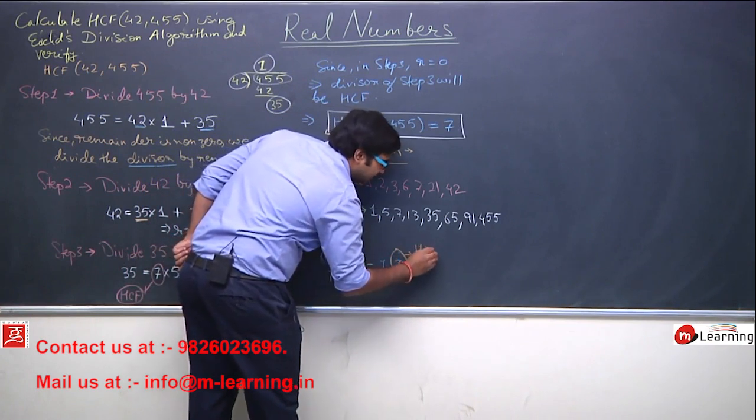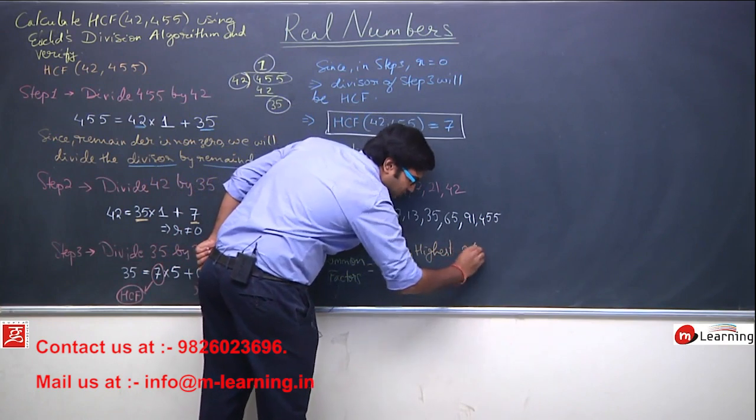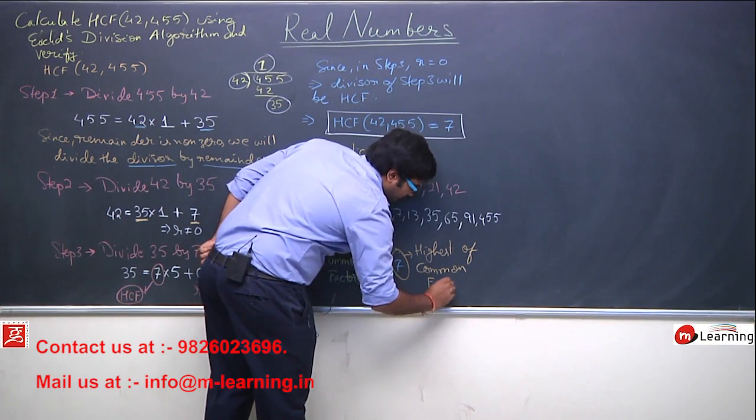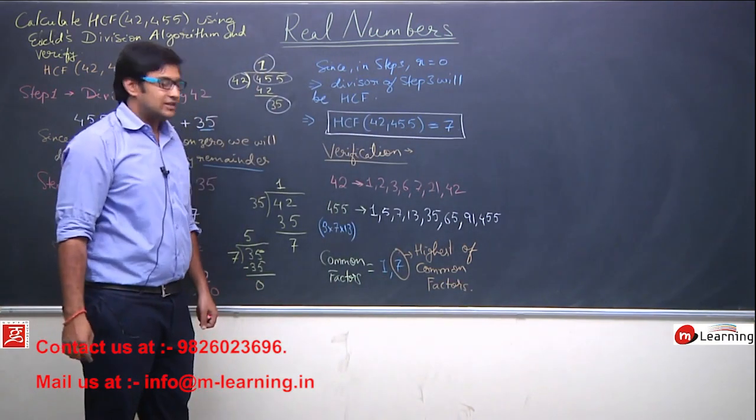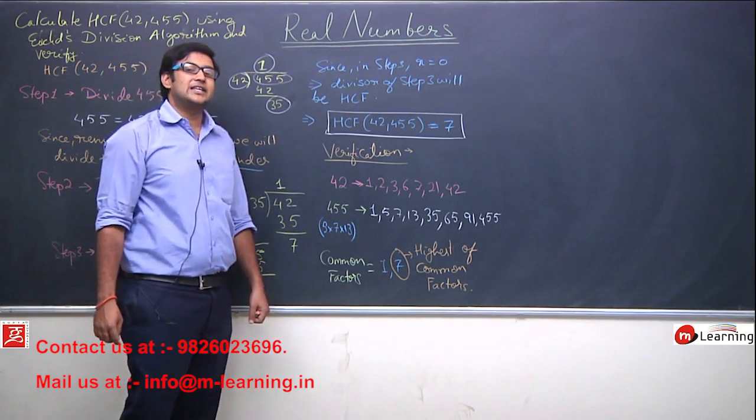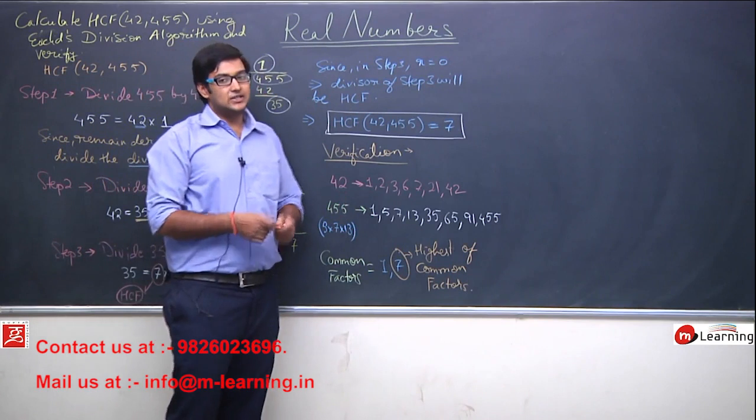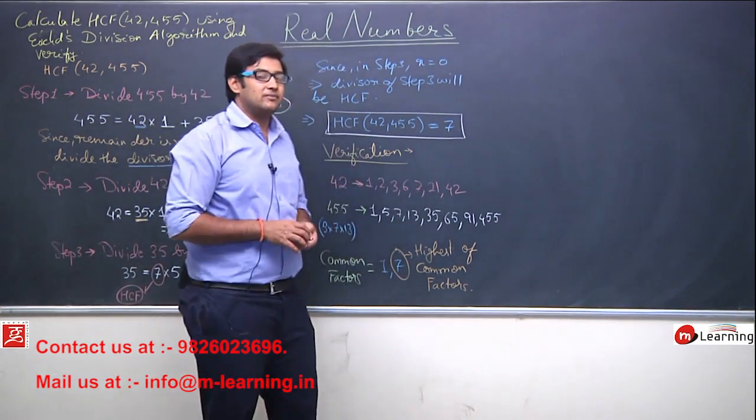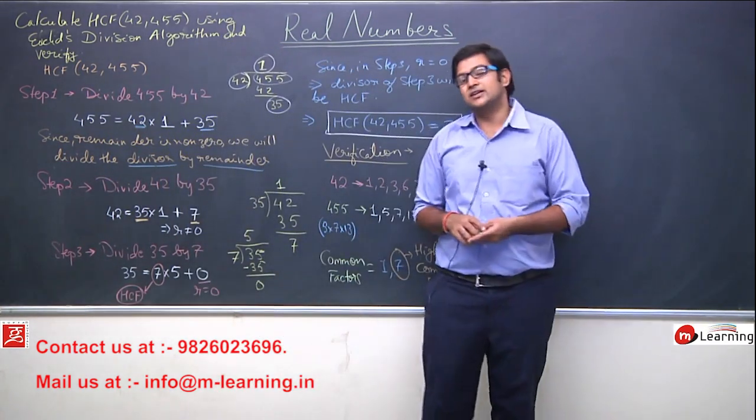So this is the highest of common factors. So I will say 7 is the HCF of 42 and 455, hence it is verified. It is verified that the Euclid's division algorithm is working perfectly to determine the HCF.